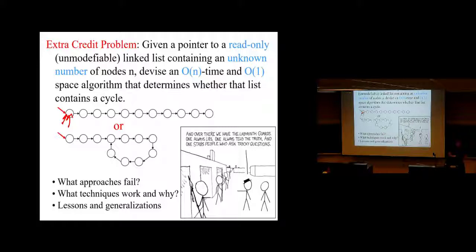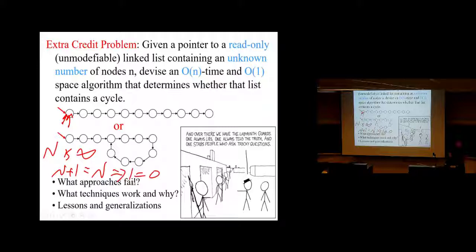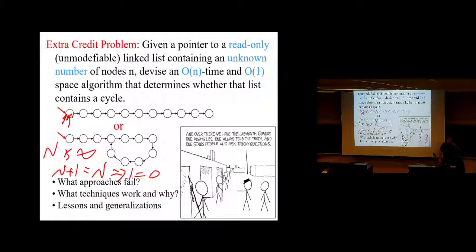If infinity is an integer, infinity plus 1 would also be an integer — the same integer, because both are infinite. And that would imply 1 equals 0. So N is a finite integer. Follow-up question: you can also show that any kind of infinity plus 1 is the same type of infinity.